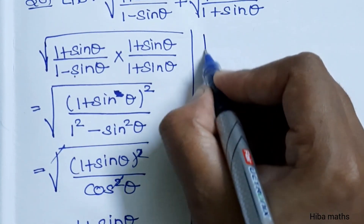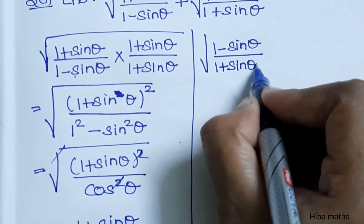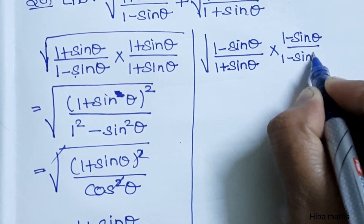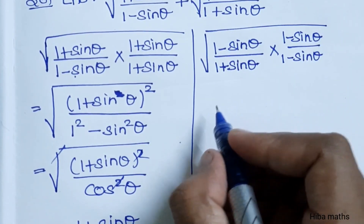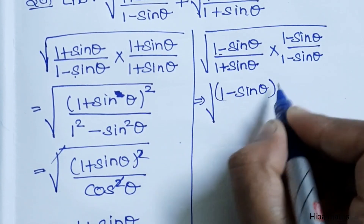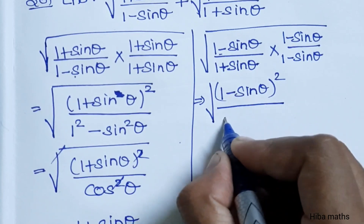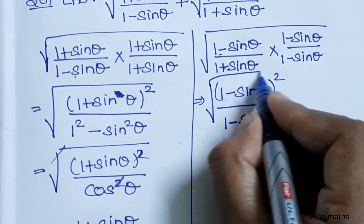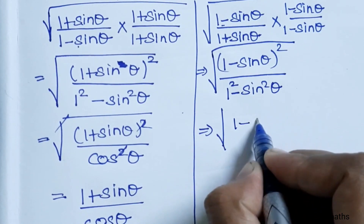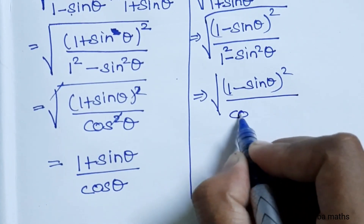Similarly, for the second term — square root of (1 minus sin theta) divided by (1 plus sin theta) — multiplying by the conjugate (1 minus sin theta) in numerator and denominator gives (1 minus sin theta) whole square divided by cos squared theta. Taking the square root gives (1 minus sin theta) divided by cos theta.